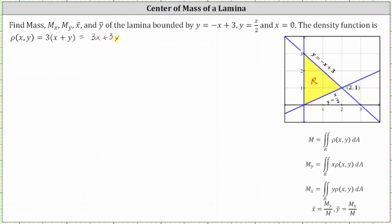Let's begin by determining the mass. The mass is equal to the double integral over the region R of the density function, differential A. Let's first decide on the order of integration — whether we should let differential A be equal to dy dx or dx dy. Looking at the bounded region R, notice it's bounded below by one line and above by one line. But if we look at the region from left to right, it's bounded on the left by one line, but on the right it's bounded by two different lines. Therefore, it's going to be easier to integrate with respect to y first and then x, so we'll let differential A be equal to dy dx.